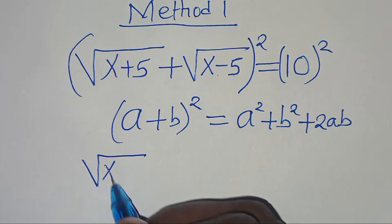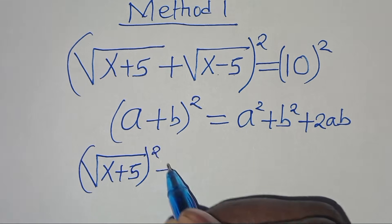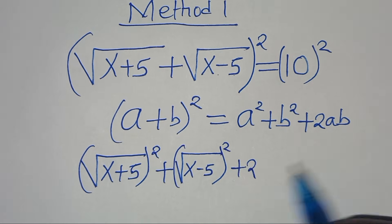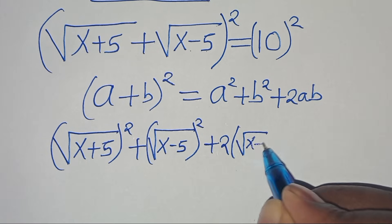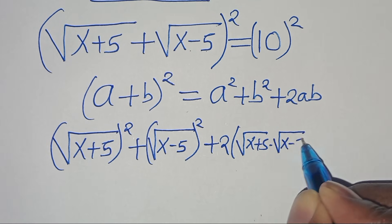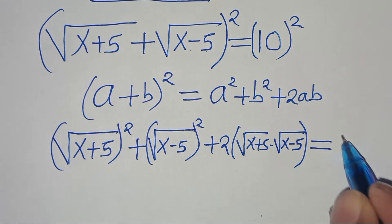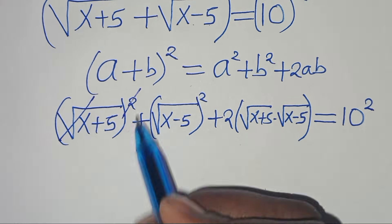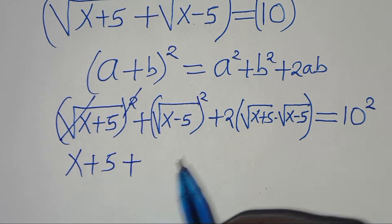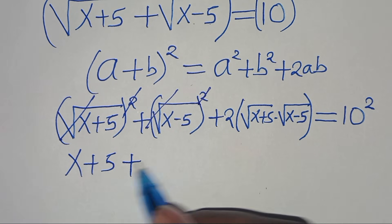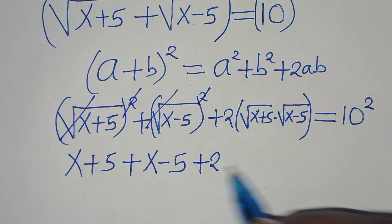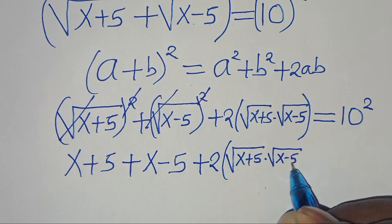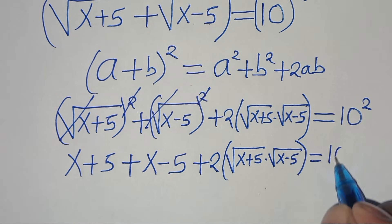We get the square root of (x+5), raised to the power of 2, plus the square root of (x−5), raised to the power of 2, plus 2 multiplied by the square root of (x+5) multiplied by the square root of (x−5), equals 10 squared, which is 100.